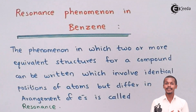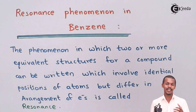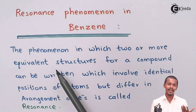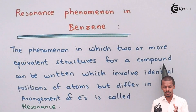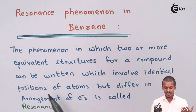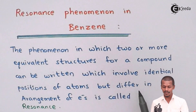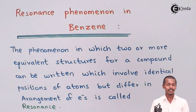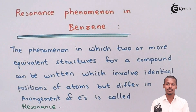Let us understand what resonance in benzene actually is. Resonance is the phenomenon in which two or more equivalent structures for a compound can be written, where the atoms remain in identical positions but there is a difference in the arrangement of electrons. That kind of phenomenon is basically known as resonance. Now we are going to discuss the resonance phenomena that we can see in benzene.